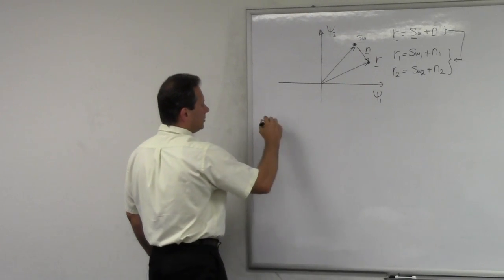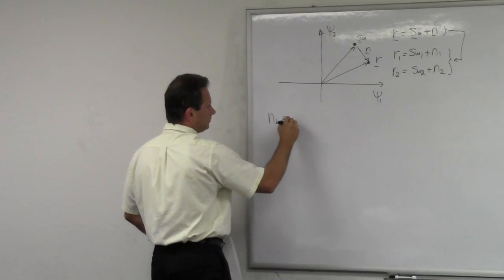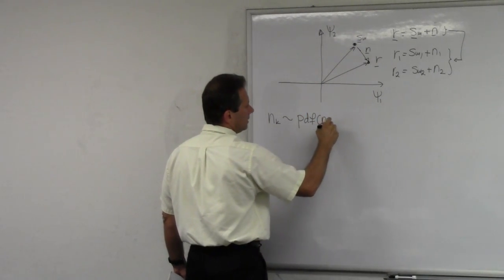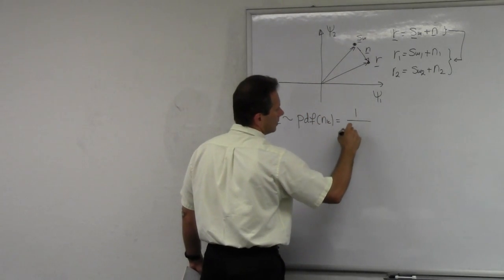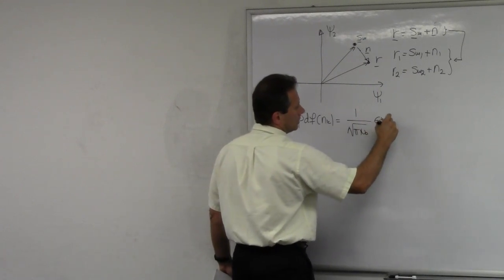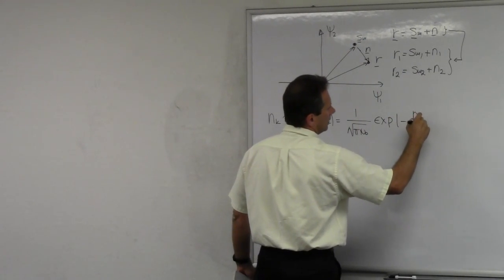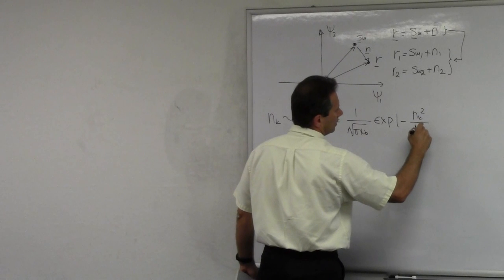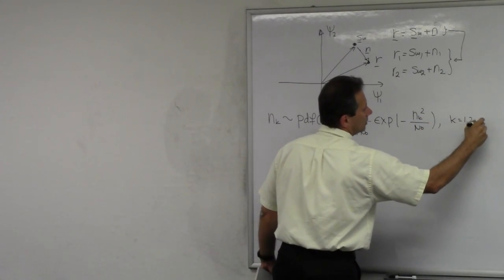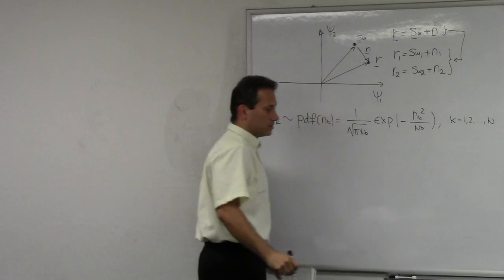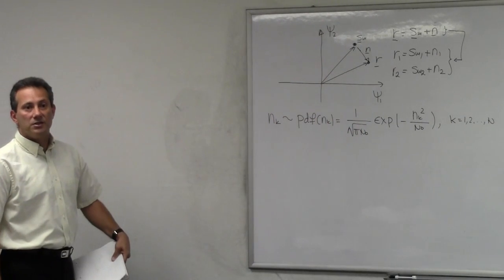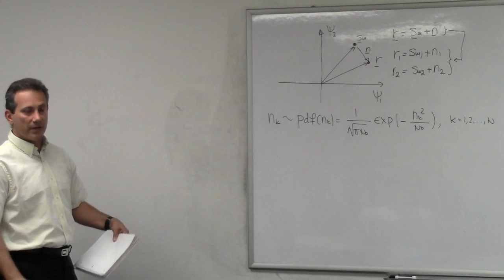The other thing that we know is that Nₖ follows the PDF: (1/√(πN₀))·exp(−Nₖ²/N₀), for K from 1 to N, where N is the dimension of your space. In this drawing, N equals 2 because I have two basis vectors.